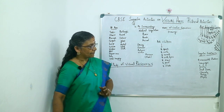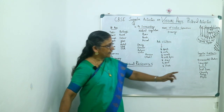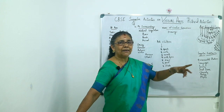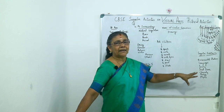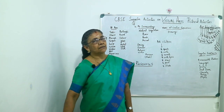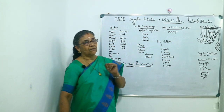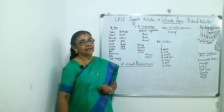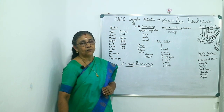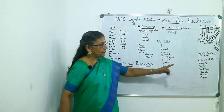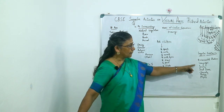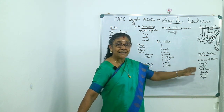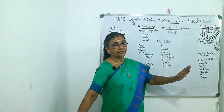These seven subjects are given. Here, science may be written separately, as in lower divisions we used to say science instead of the branches of science. So these are the suggestive subjects given by CBSE.